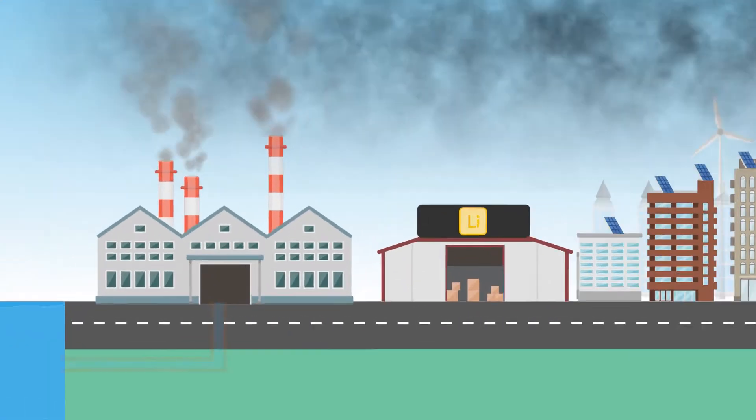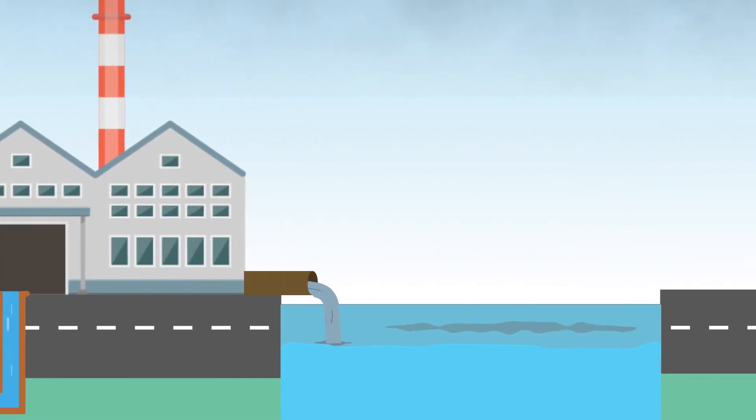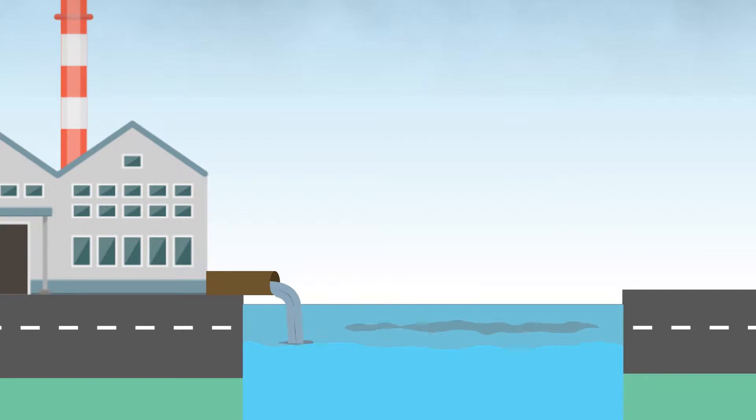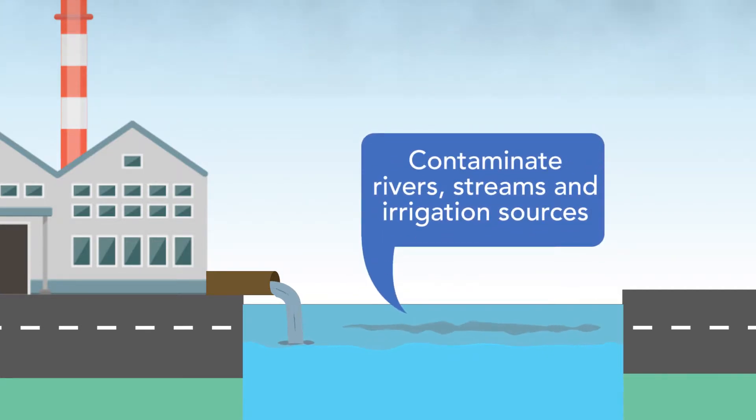Some techniques use up to 500,000 gallons of fresh water to extract one ton of lithium. In other cases, effluent from hard rock mining and toxic brines can contaminate rivers, streams, and irrigation sources.